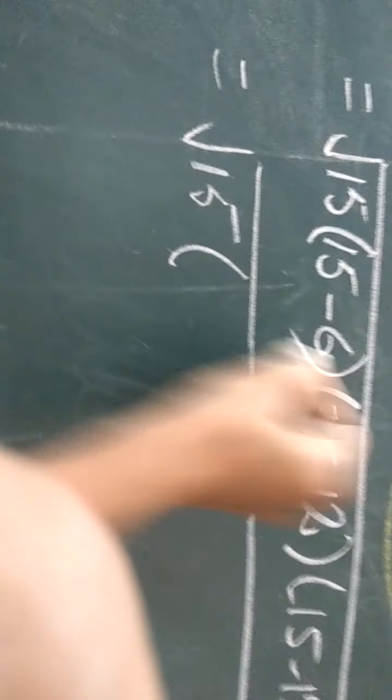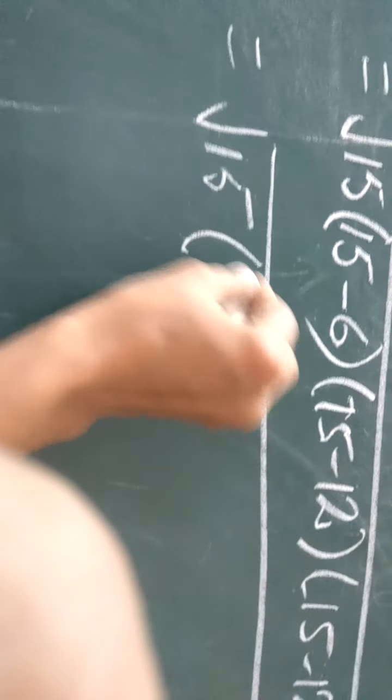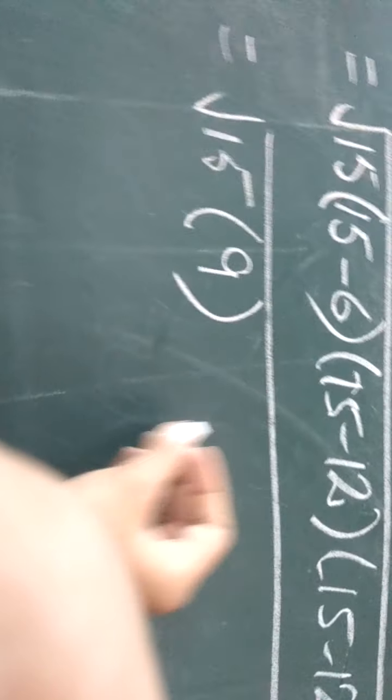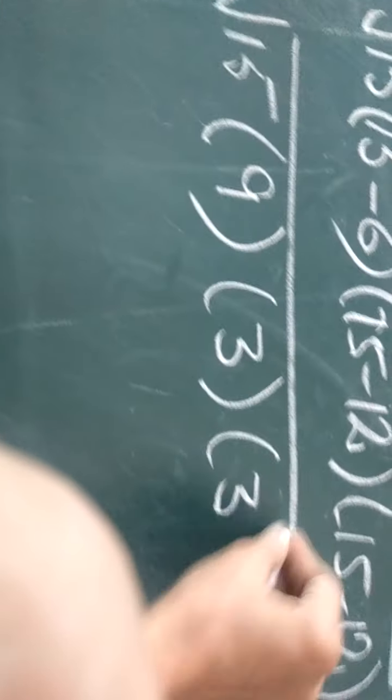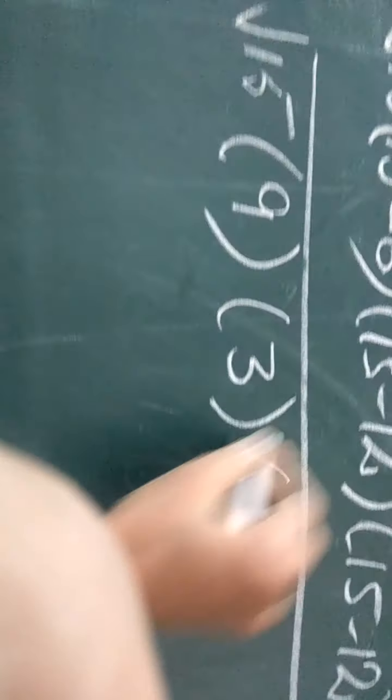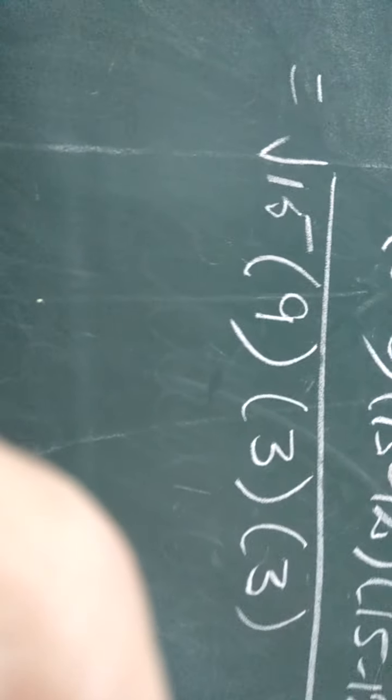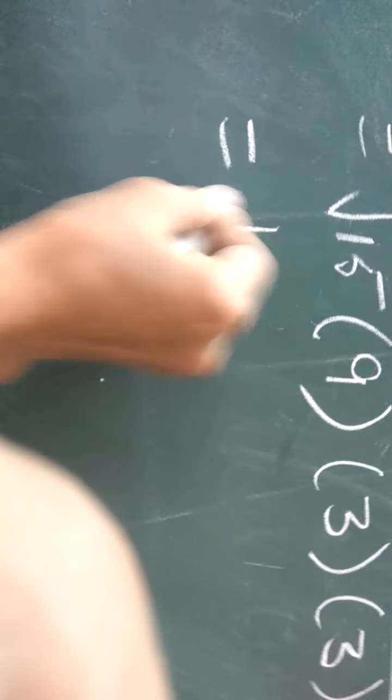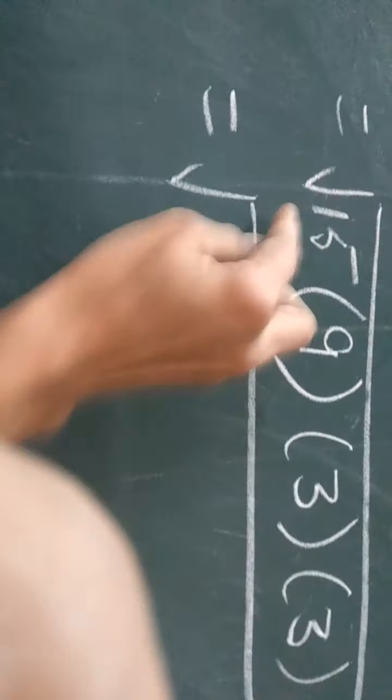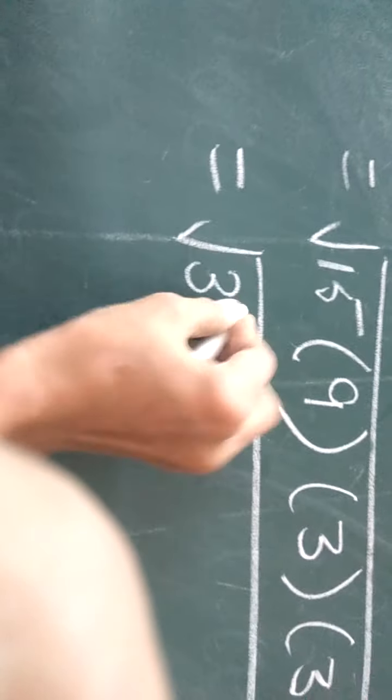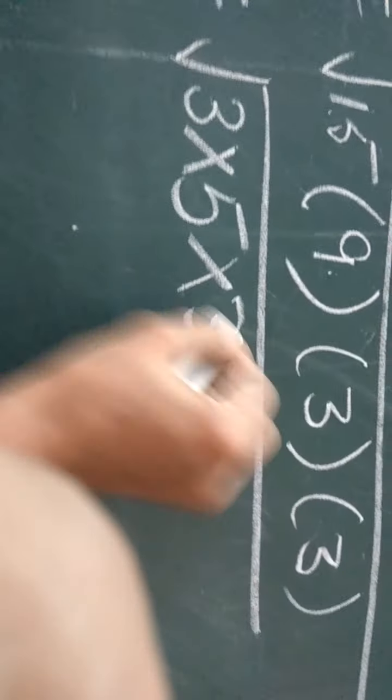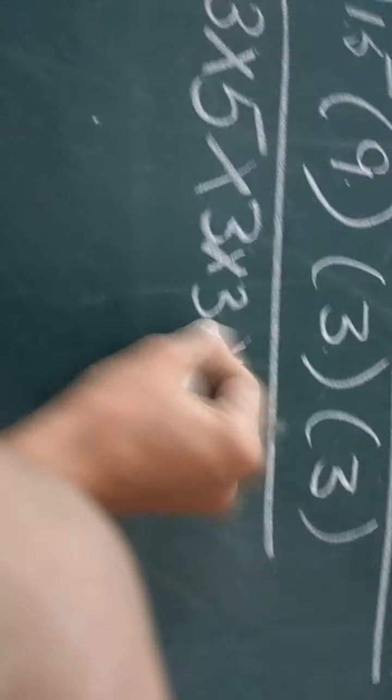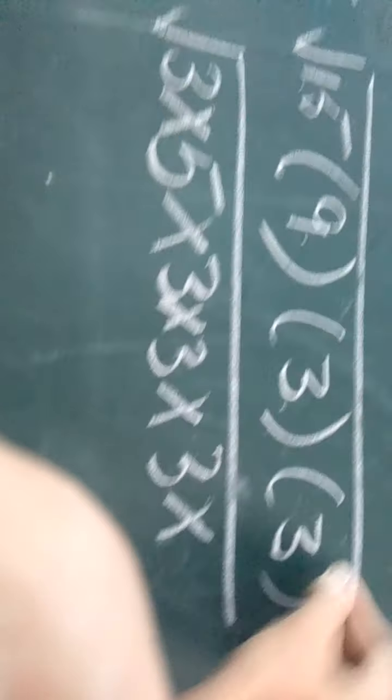15, 15 minus 6 is 9. And from here we will get 3 multiplied by 3. We can remove the brackets by putting the multiplication sign. Now as I told you, we must factorize to solve this square root. We must factorize: 3 times 5 is 15, 3 times 3 is 9. This 3 and this 3.